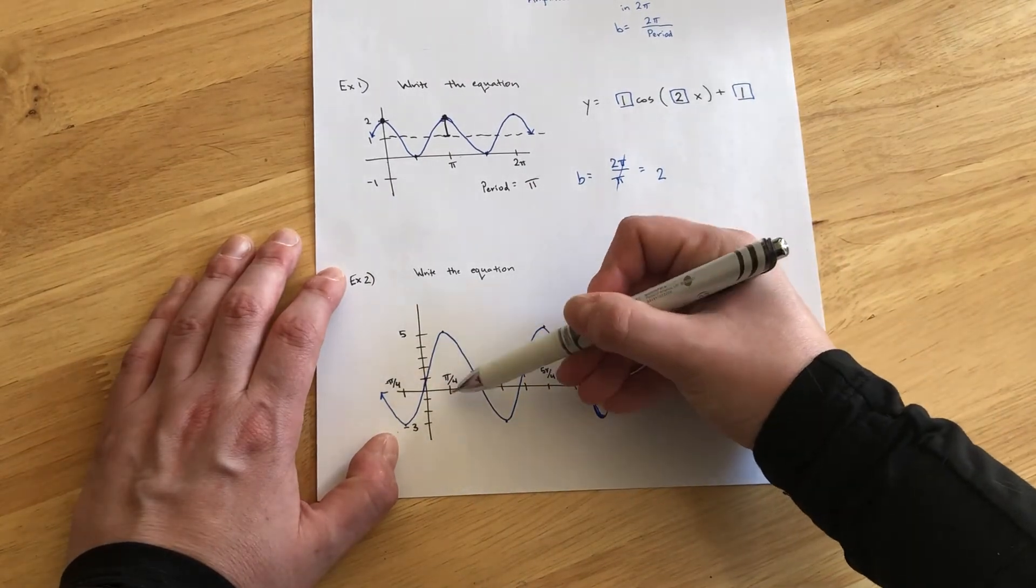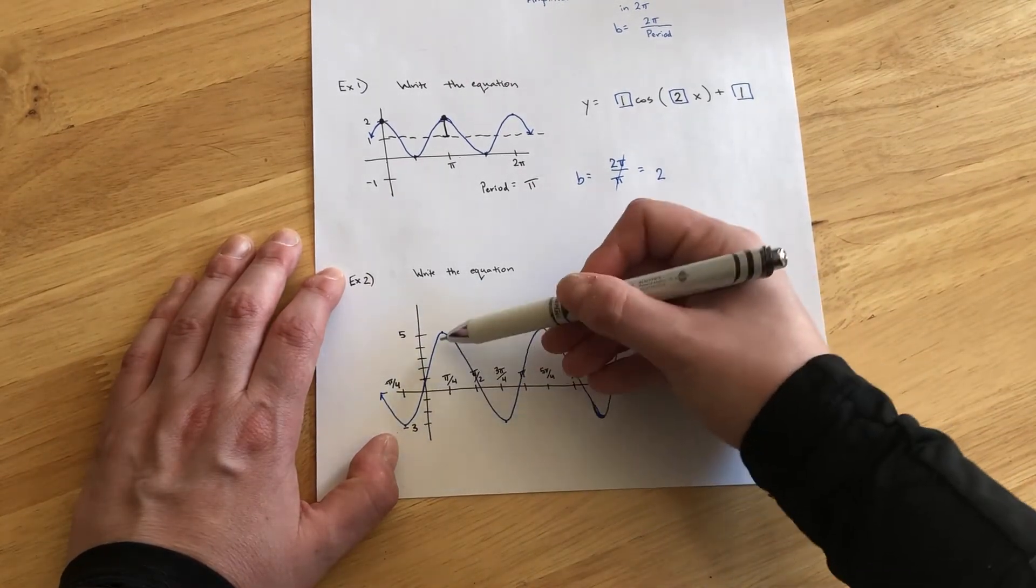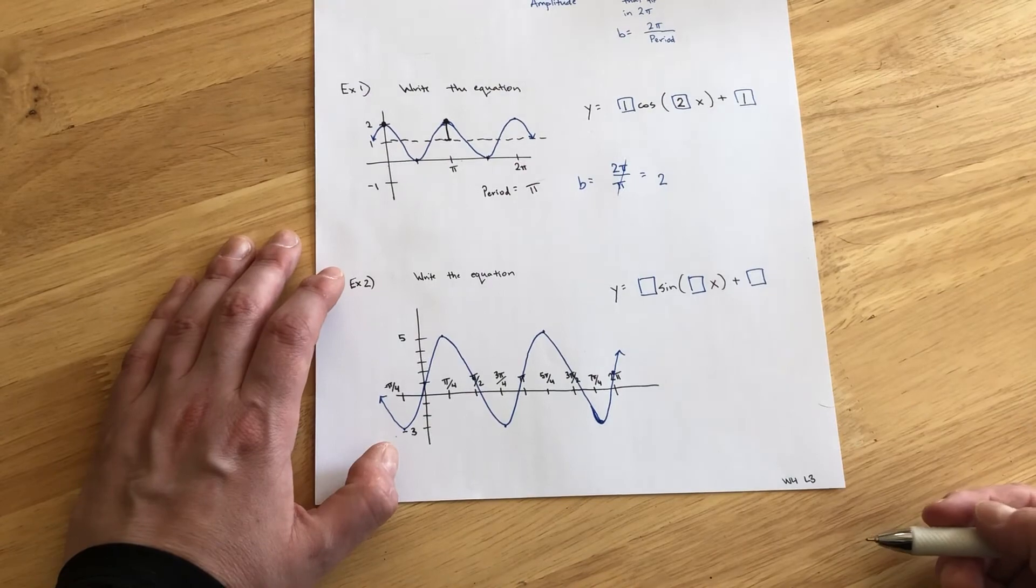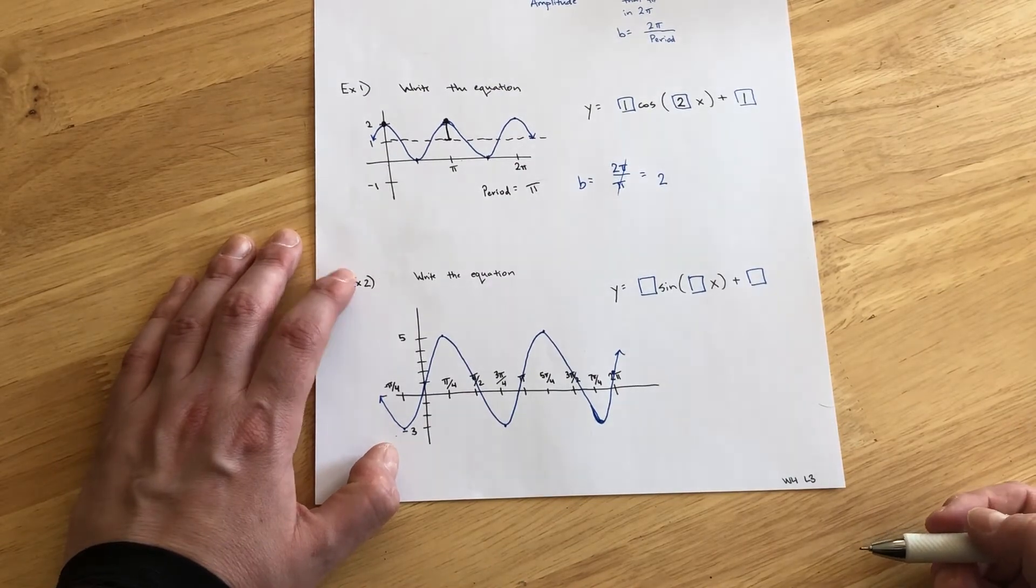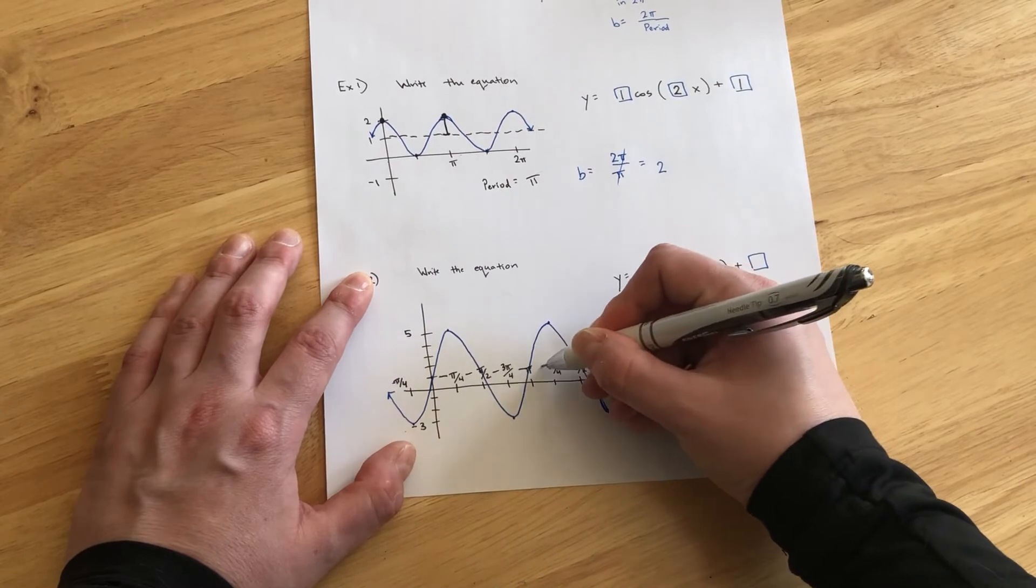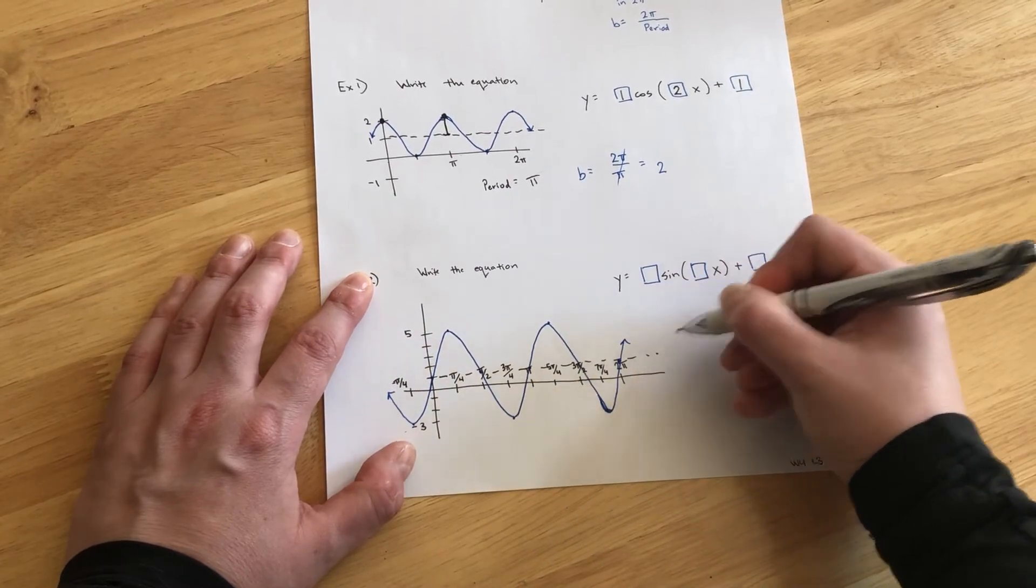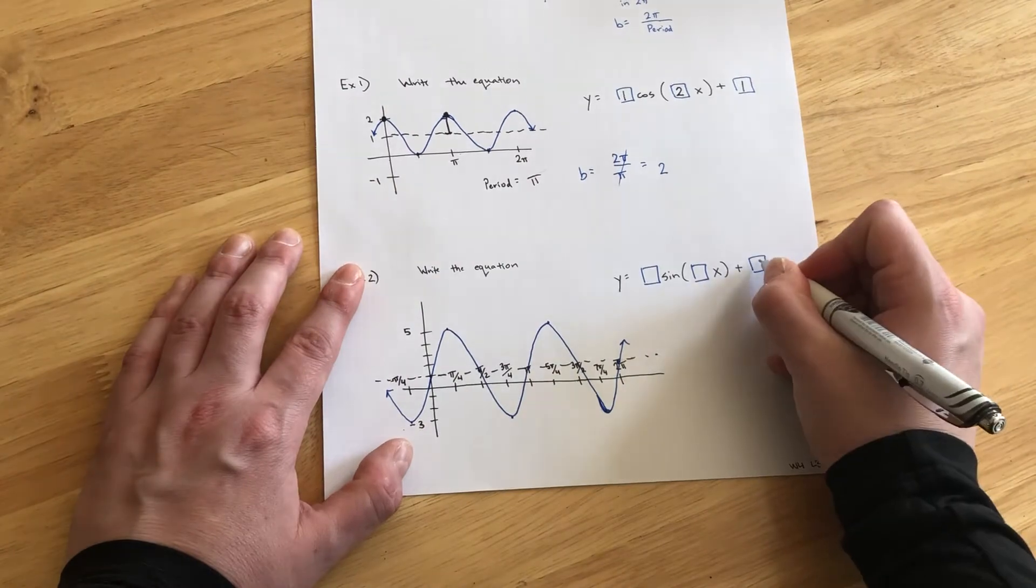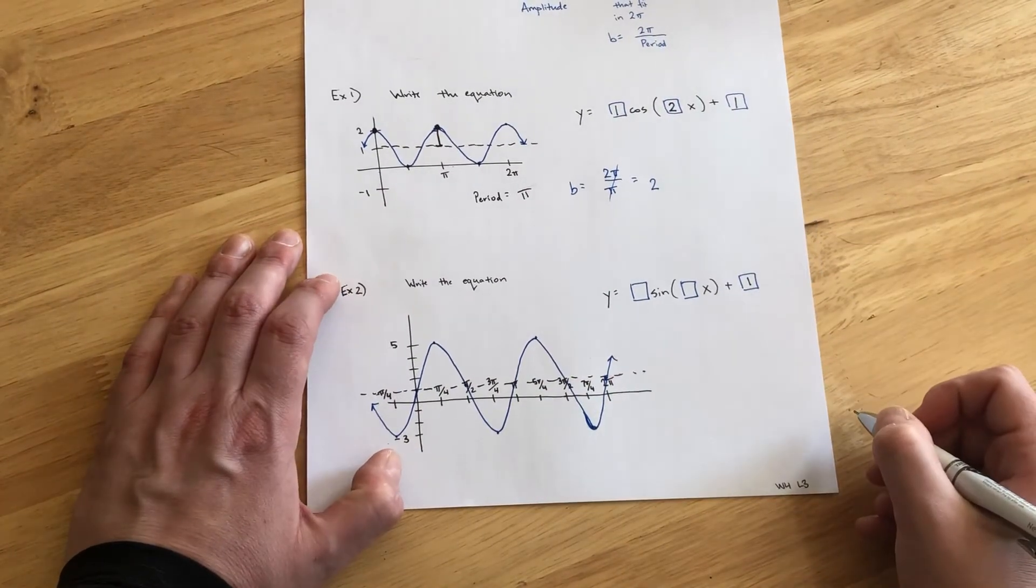So, our peak is at 5. The lowest is at negative 3. So, if we find that average, 5 plus negative 3 and divide by 2, we get a midline of 1. Okay. So, that means our D parameter is plus 1.